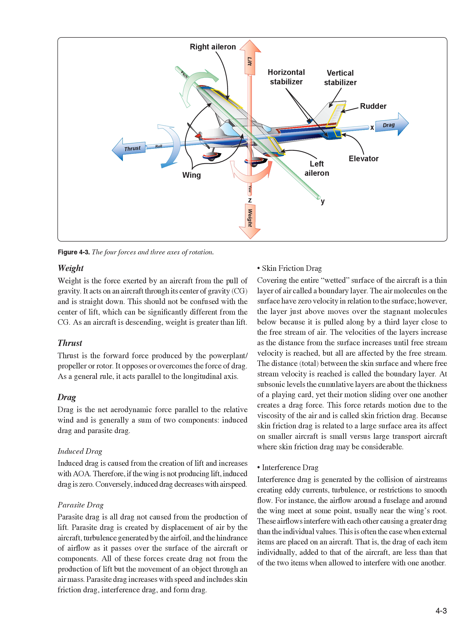Interference Drag. Interference drag is generated by the collision of air streams creating eddy currents, turbulence, or restrictions to smooth flow. For instance, the airflow around a fuselage and around the wing meet at some point, usually near the wing's root. These airflows interfere with each other causing a greater drag than the individual values. This is often the case when external items are placed on an aircraft — the drag of each item individually, added to that of the aircraft, is less than that of the two items when allowed to interfere with one another.